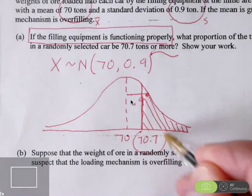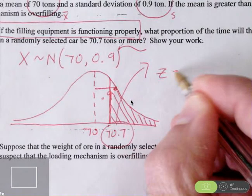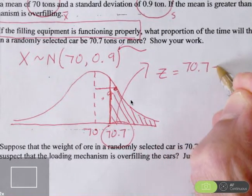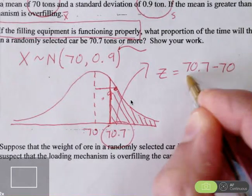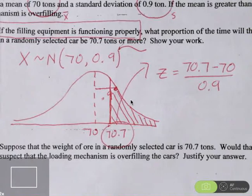This 70.7 I'm going to turn into a z-score using our z-score formula. 70.7 is the observation I'm interested in. The mean of this process is 70, the standard deviation is 0.9. If I calculate that, 70.7 minus 70 divided by 0.9 gives me a z-score of 0.78.